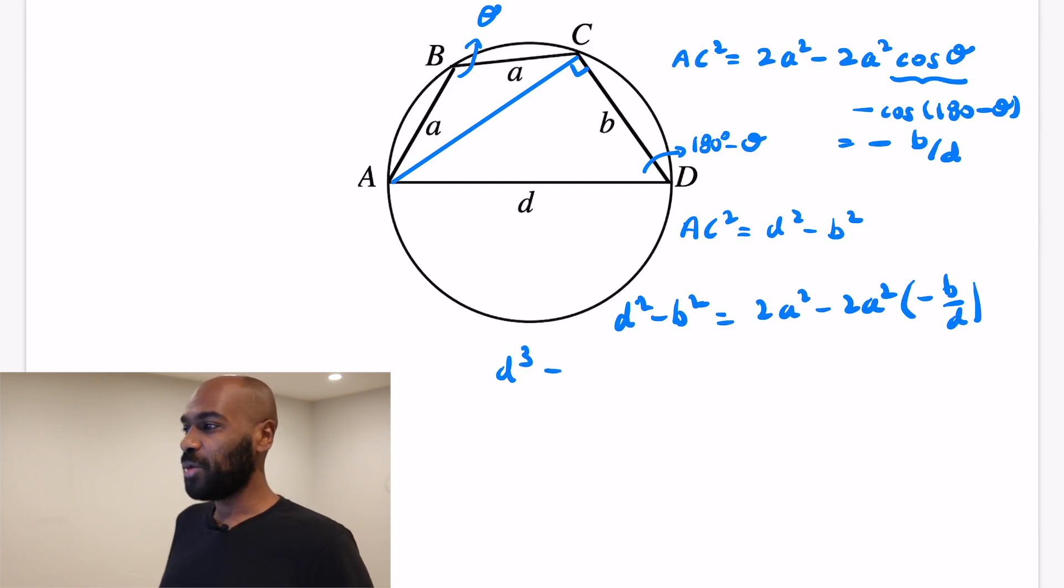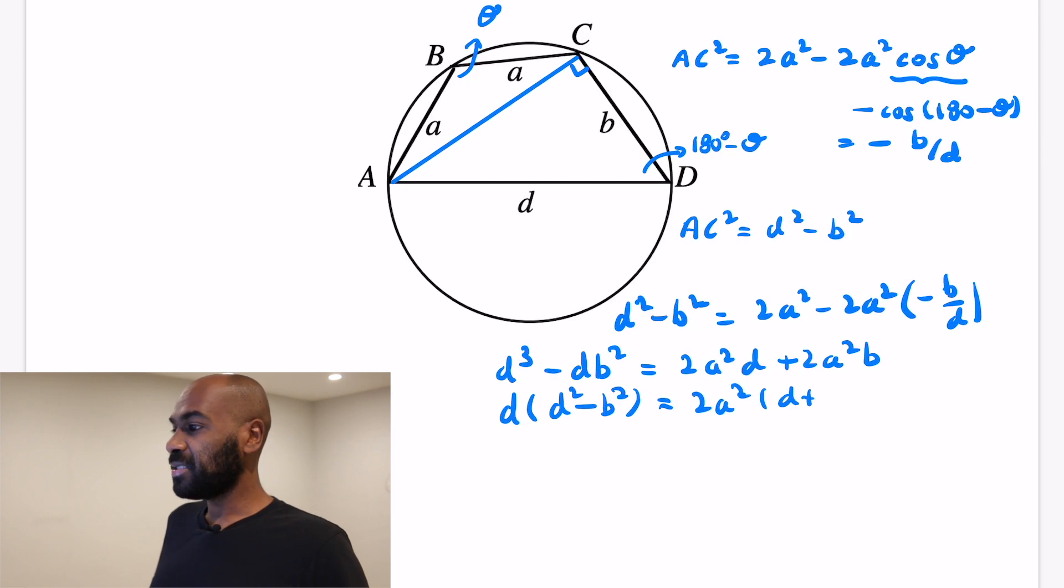Let's move things around here, so it'll be easier to determine what the smallest possible value that D can take on is. If we multiply by D throughout, we get D cubed minus DB squared is going to equal 2A squared times D plus 2A squared times B. And let's factor things so that we have the D separated out, so we have D times D squared minus B squared is equal to 2A squared times D plus B. And since D squared minus B squared has D plus B as a factor, with D minus B as the other factor, we can divide the D plus B on each side to be able to say that D times D minus B is equal to 2A squared.